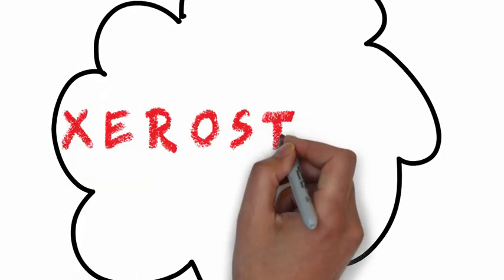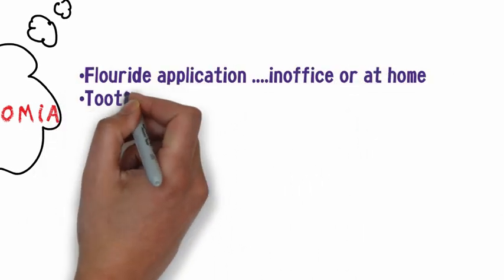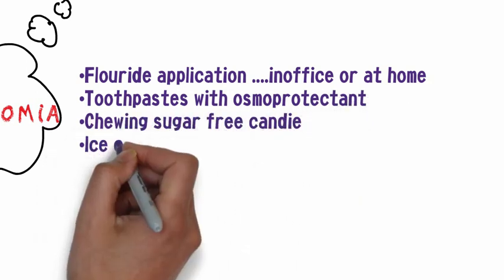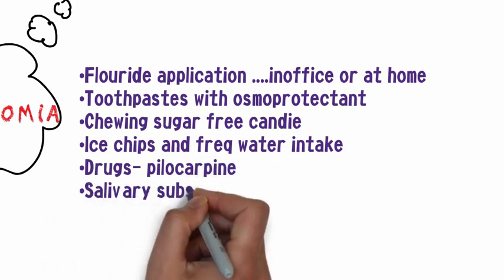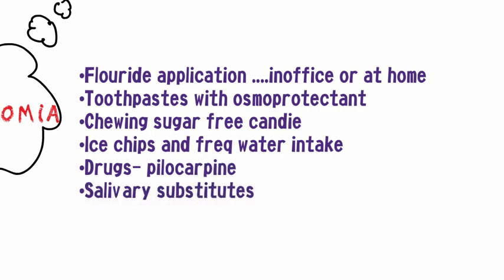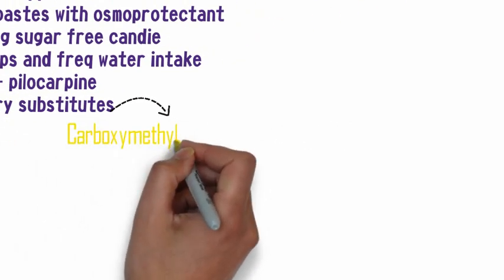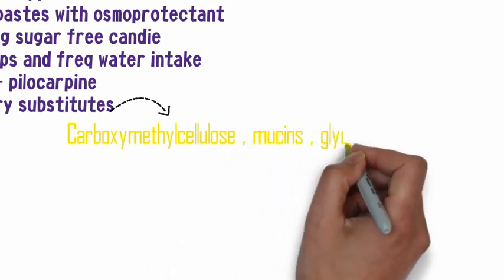For treatment of xerostomia or dry mouth, the following are recommended: fluoride application, toothpaste with osmoprotectants such as betaine, xylitol-based candies, and use of ice chips. Drugs or artificial salivary substitutes — available in the form of sprays and gels — may also be given. Salivary substitutes function as artificial saliva and are available over the counter, and may contain various active ingredients.